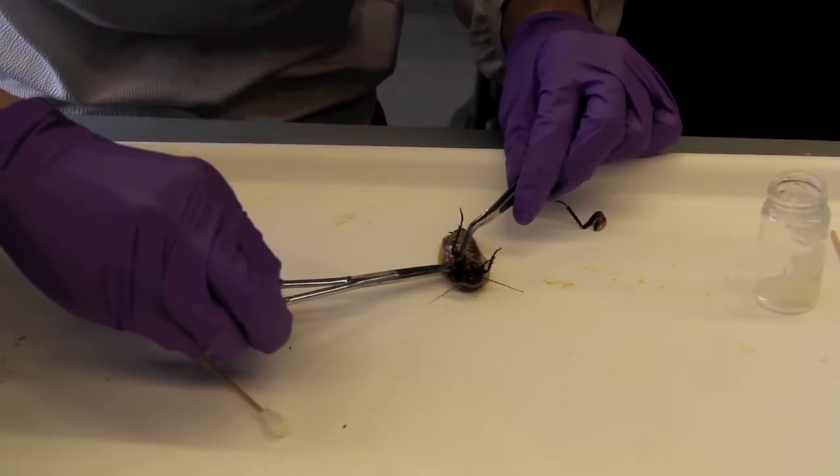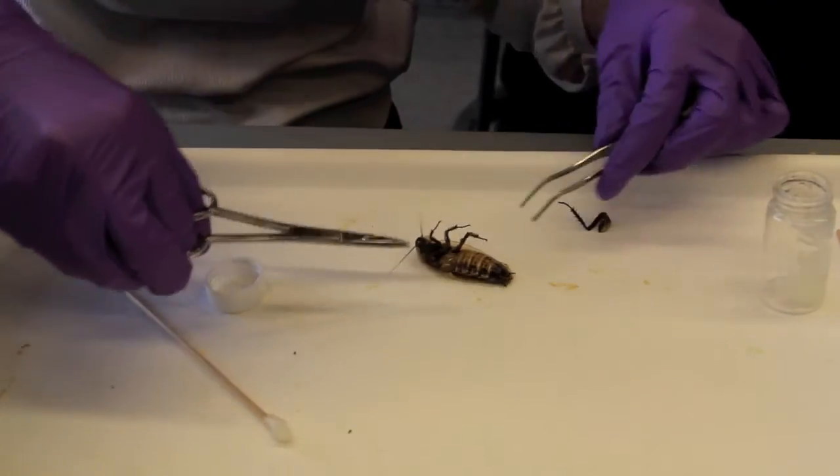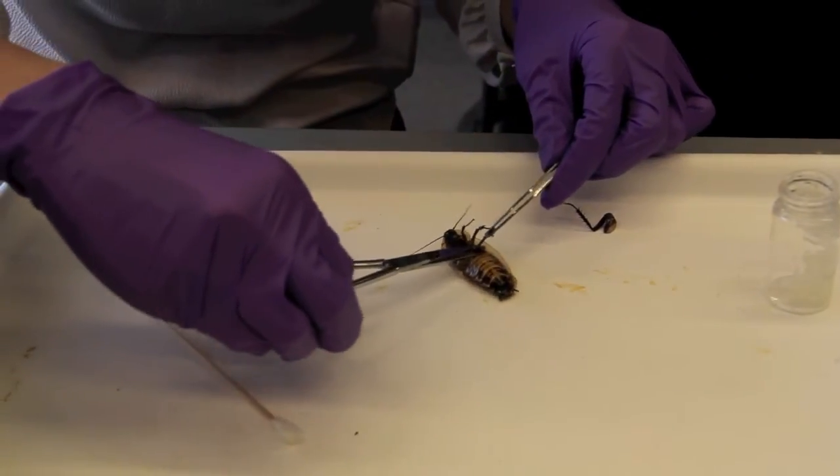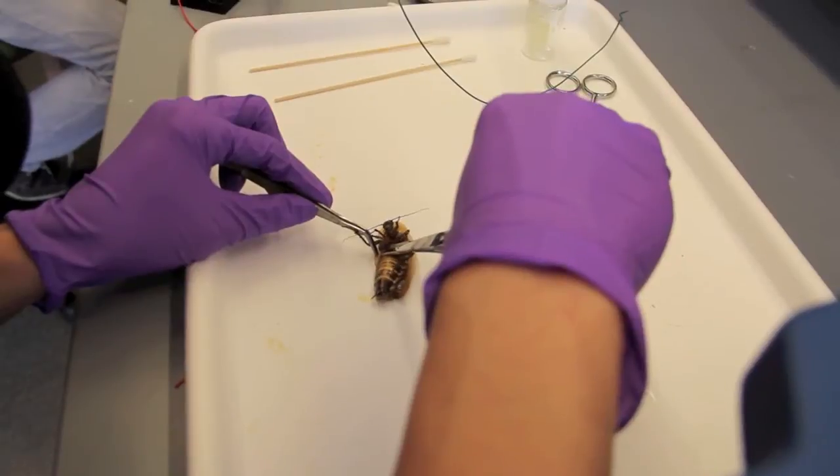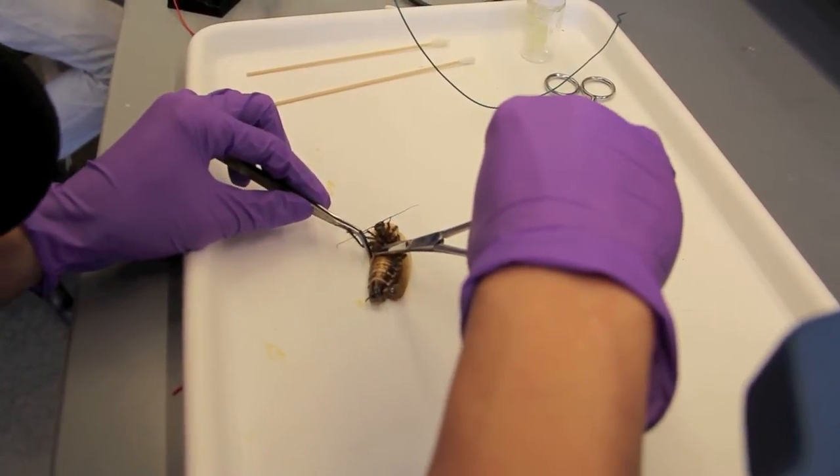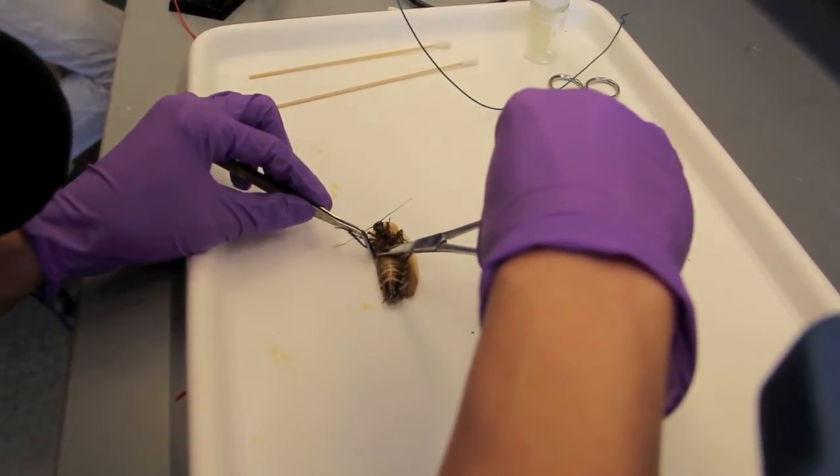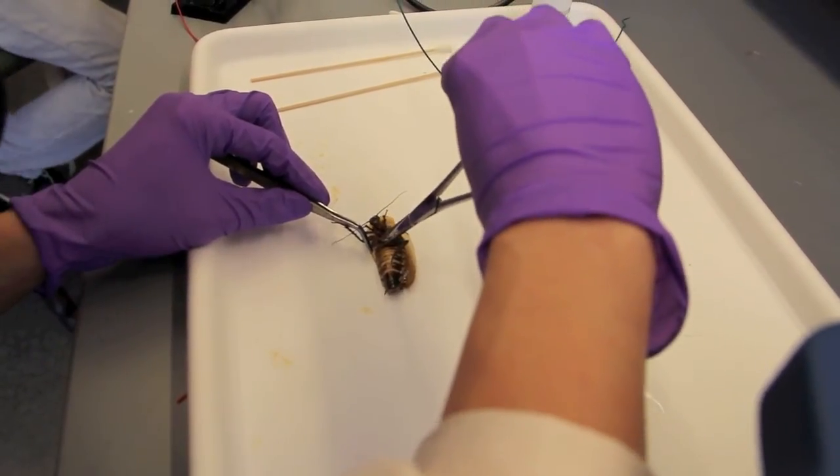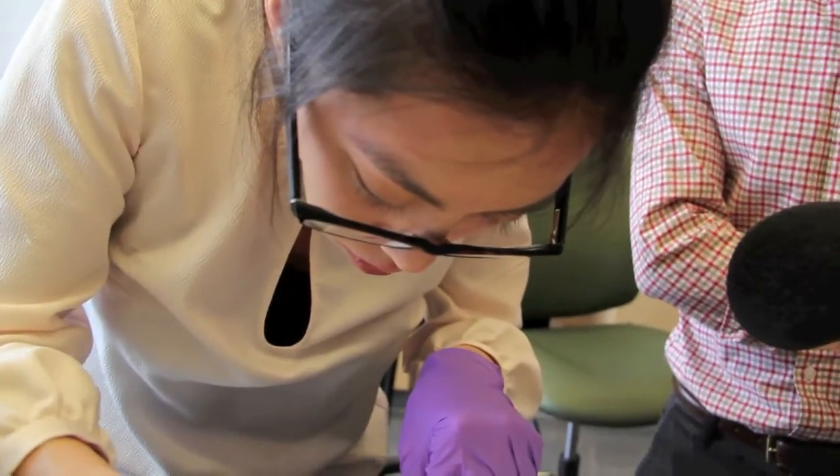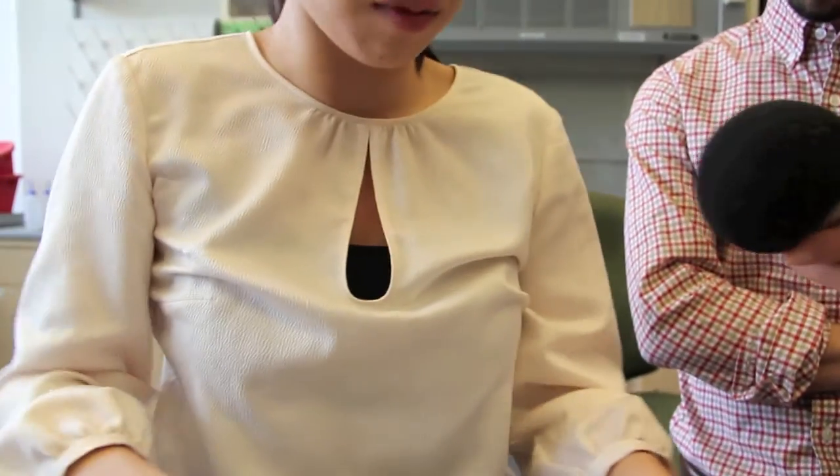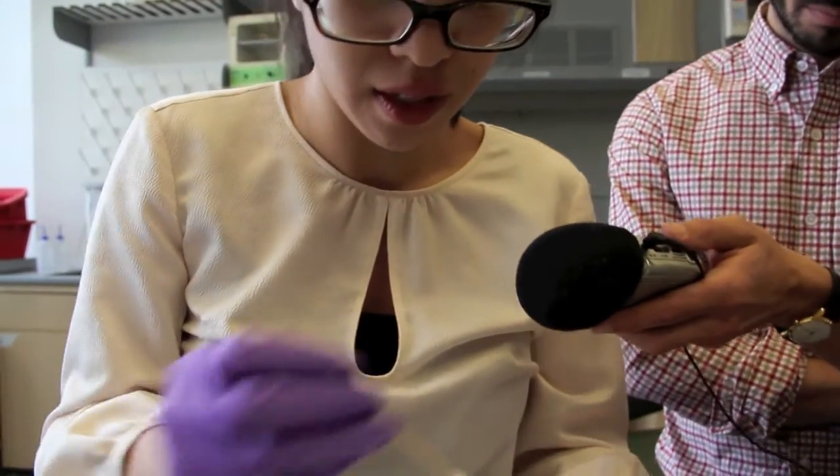We try to work as quickly as we can so the cockroach doesn't come out of its little anesthetized state. Then we're just gonna put him in a plastic bag and put him in the freezer to euthanize him fully.